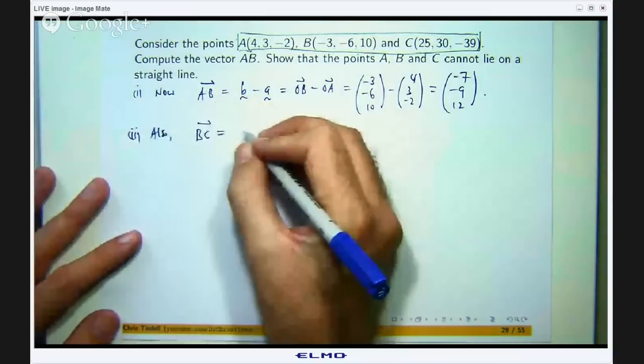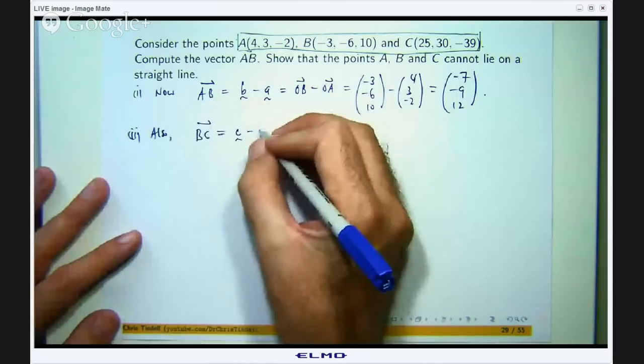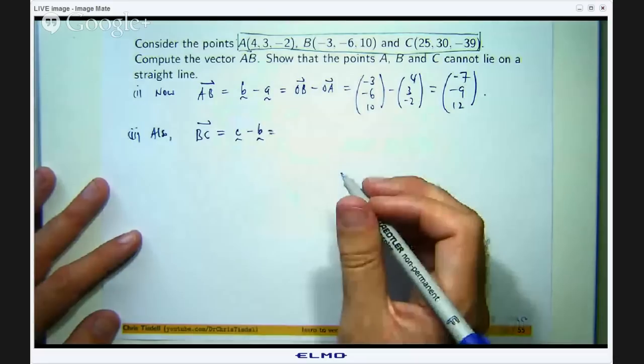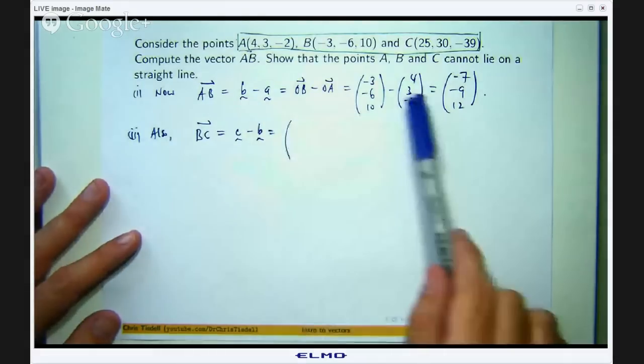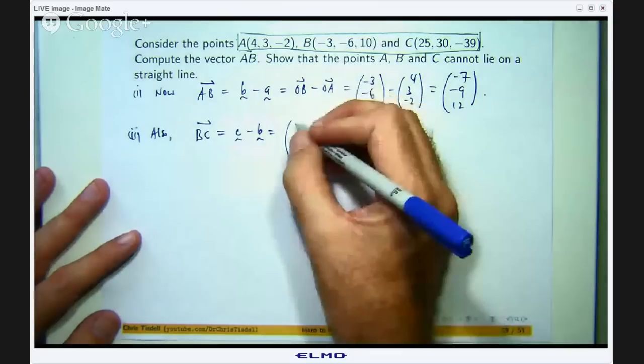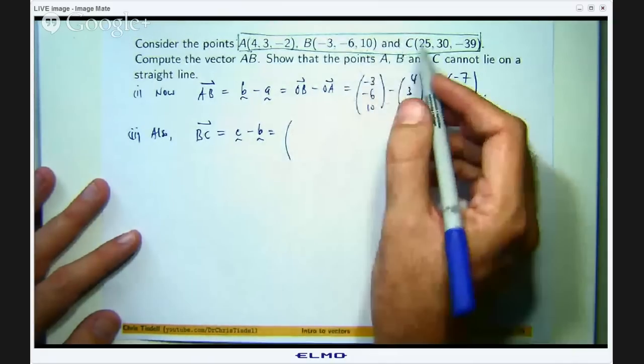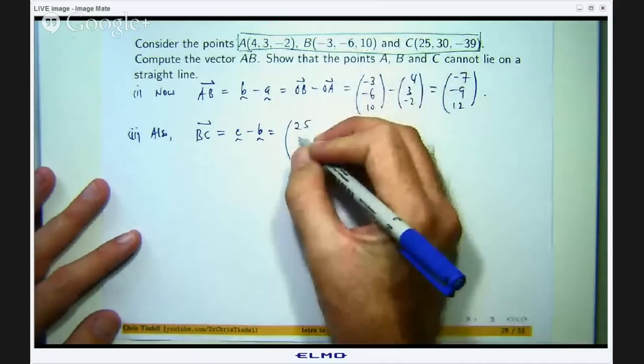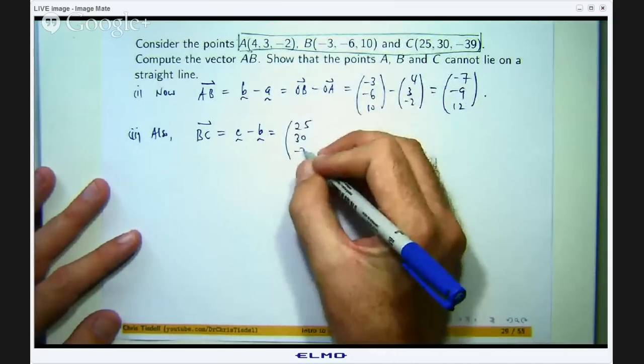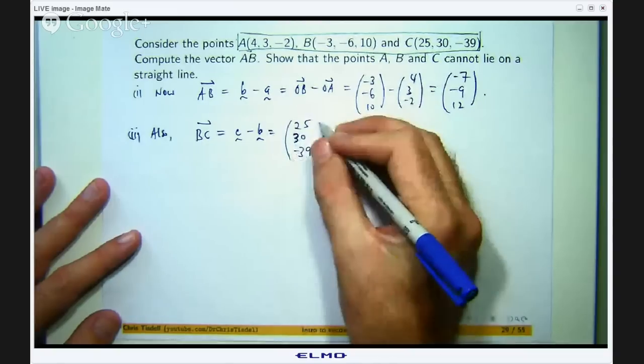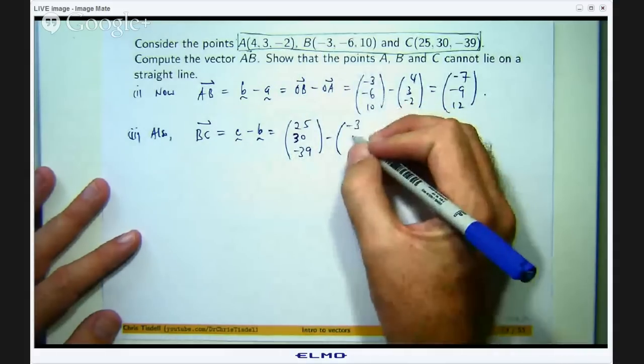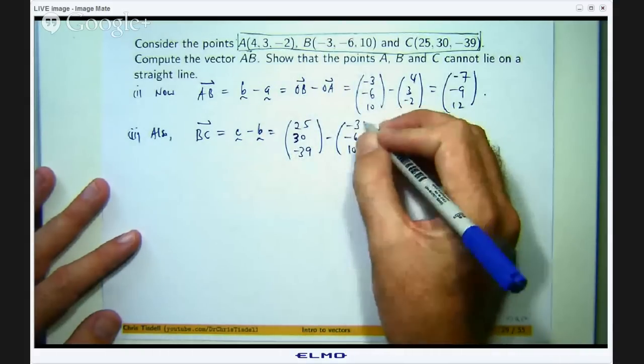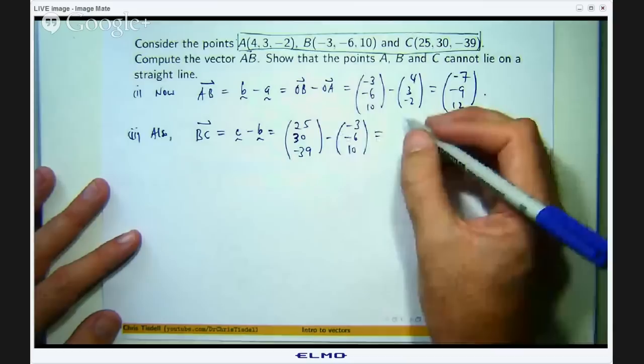So the vector BC is just the position vector of C minus the position vector of B. So the position vector of C is up here.